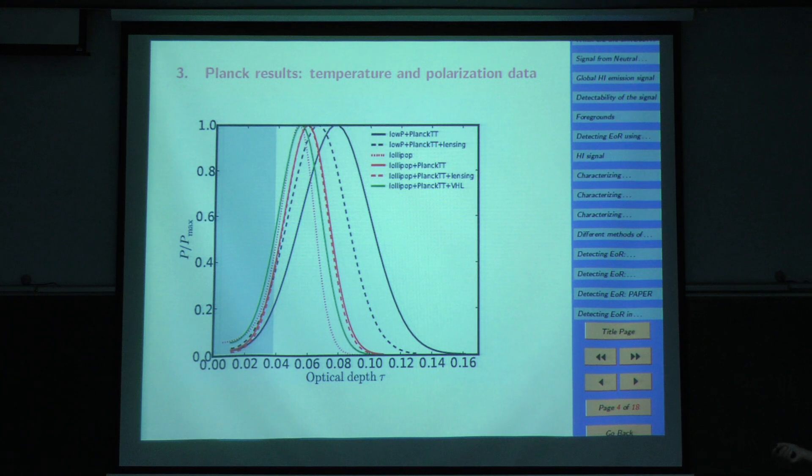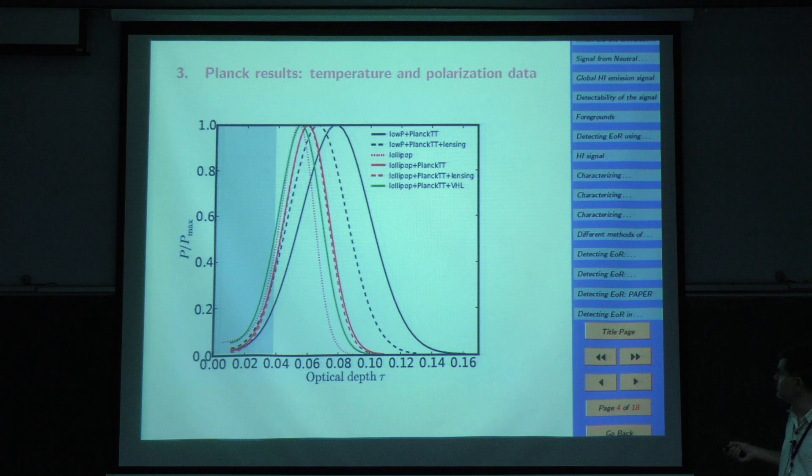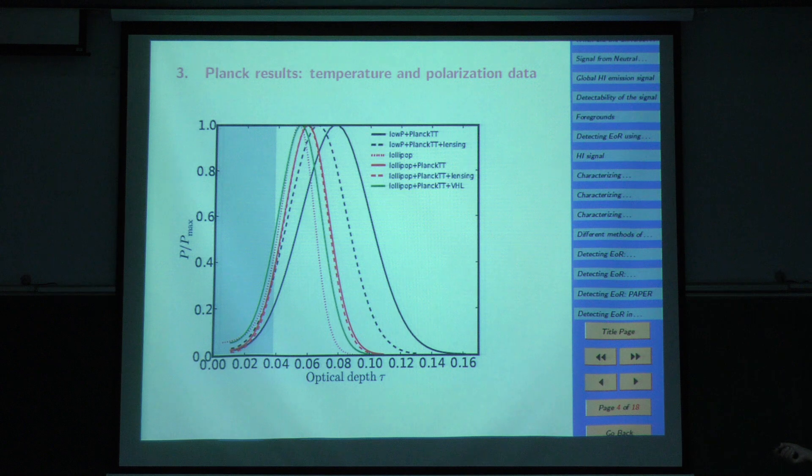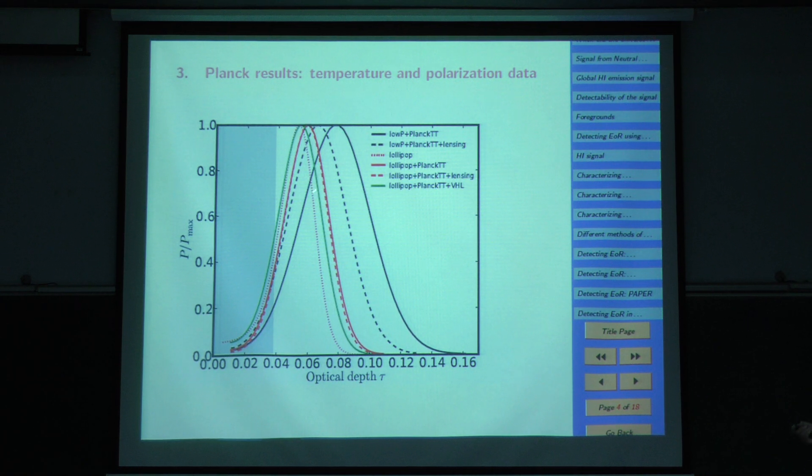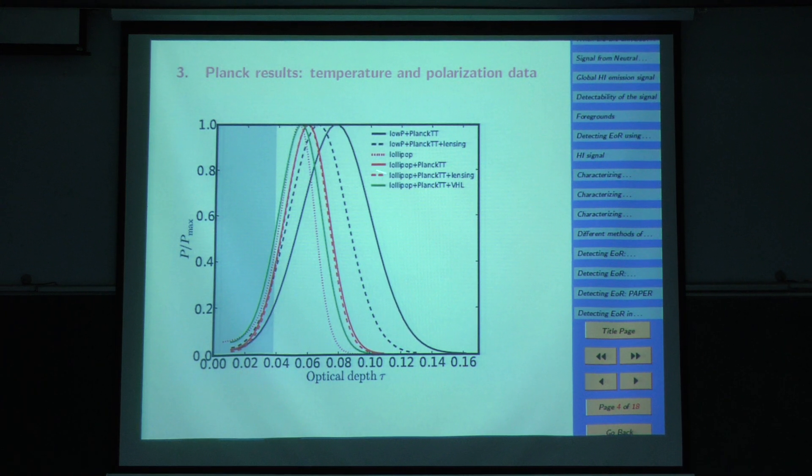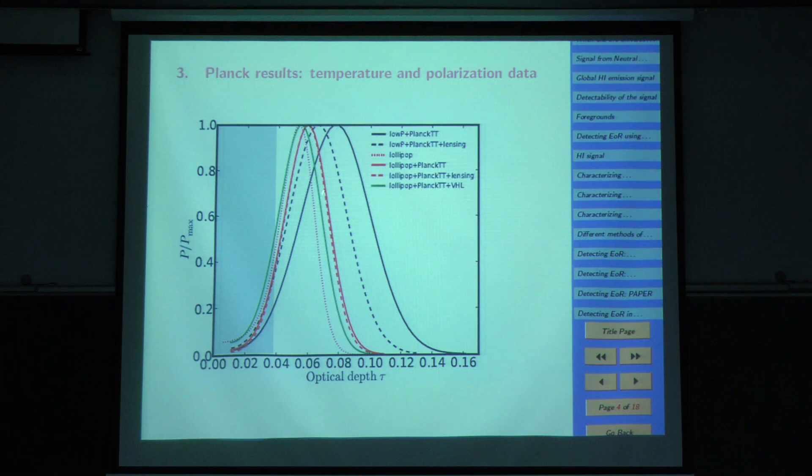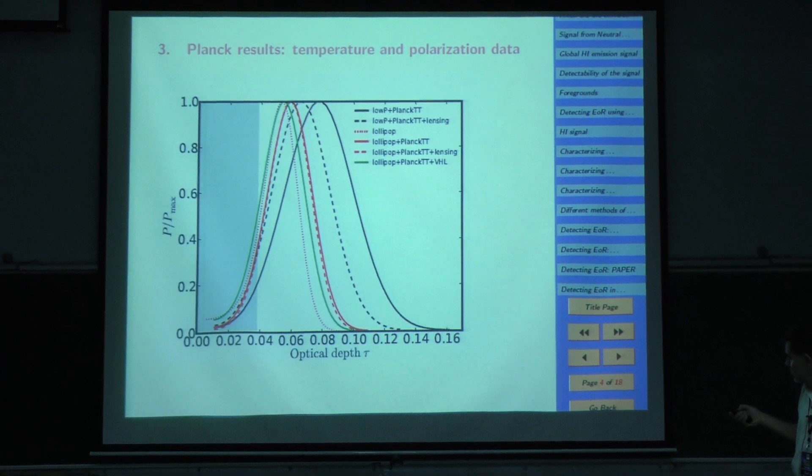Here is the defining observation that has spurred activity in the epoch of reionization in the past 10 years. This was started by WMAP results, and this is from the most recent result of Planck, 2016. This shaded region comes from the previous plot. The Planck result is not completely consistent with it, but close to it. What is important about Planck result is that from temperature data alone, along with lensing, Planck is able to say something about reionization surface.